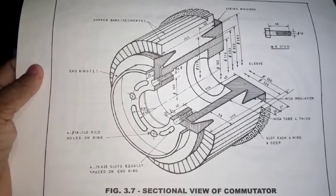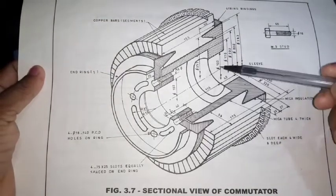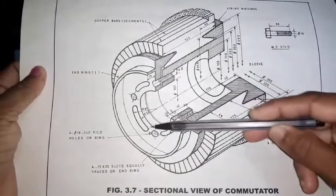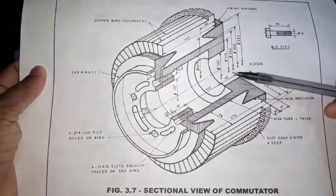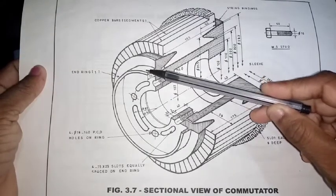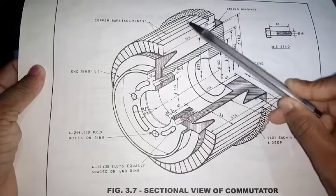Here you can see this part. This part is connected to the shaft of the machine. And this one is known as the end ring of the machine. These are the copper bars or segments.